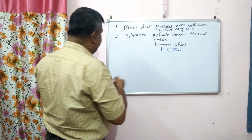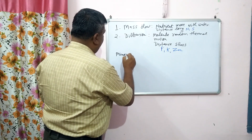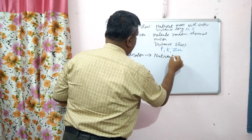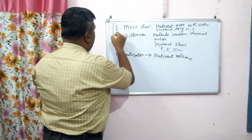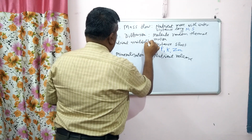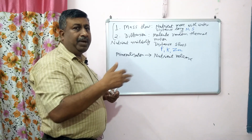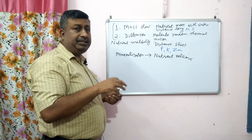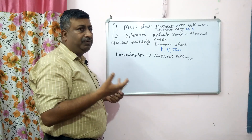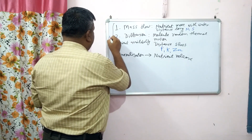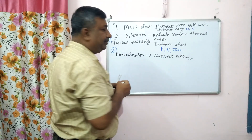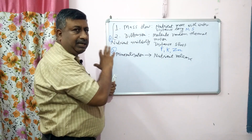The third pathway or mechanism is mineralization, through which nutrients are released — mineralization is responsible for nutrient release. Mass flow and diffusion decide how much nutrient is available to the plant root, while mineralization decides how much nutrient is released into the soil solution, which is then available for mass flow and diffusion. So first mineralization occurs, nutrients are released, then nutrients move either through mass flow or diffusion.